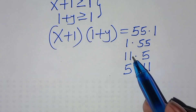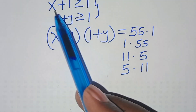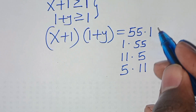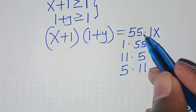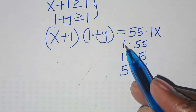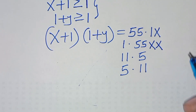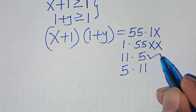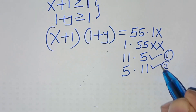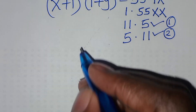Here we have 11 times 5, and 5 times 11. The condition is that x plus 1 is greater or equal to 1. The first set of values, that is 55 times 1, this violates the condition, and 1 times 55 also violates the condition. So we only have 2 cases here: this is the first case, and this is the second case. Let's start to solve case 1.